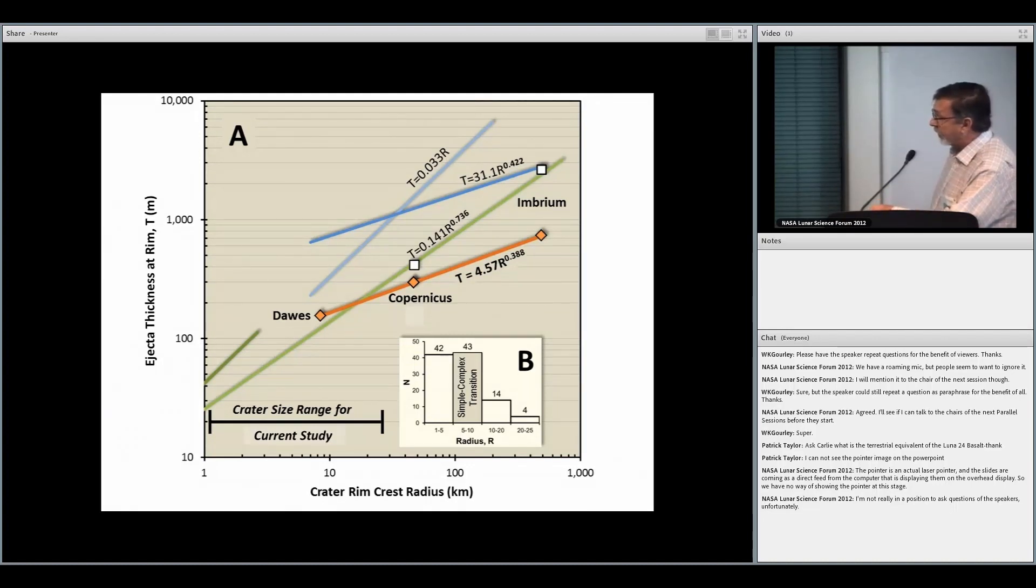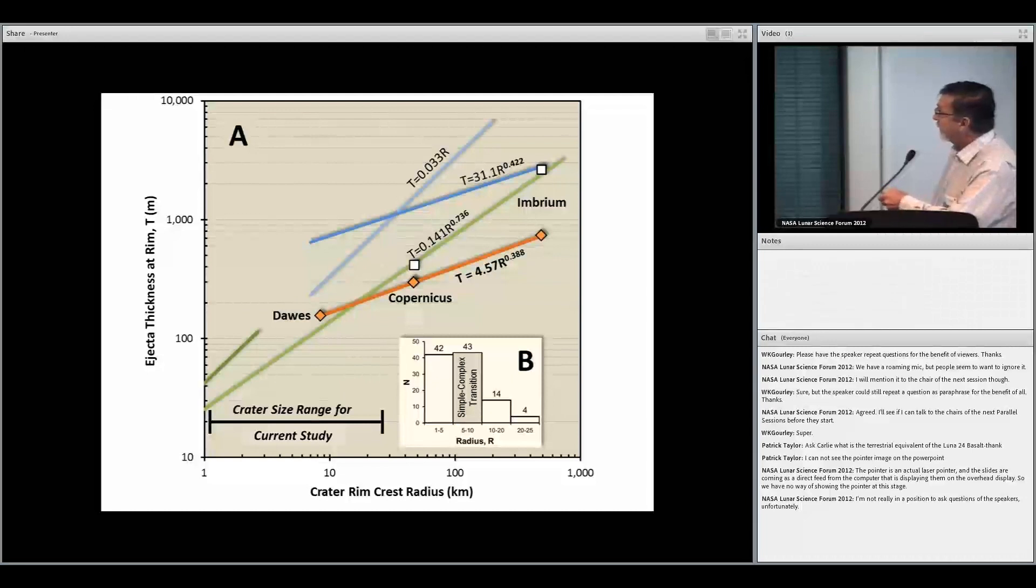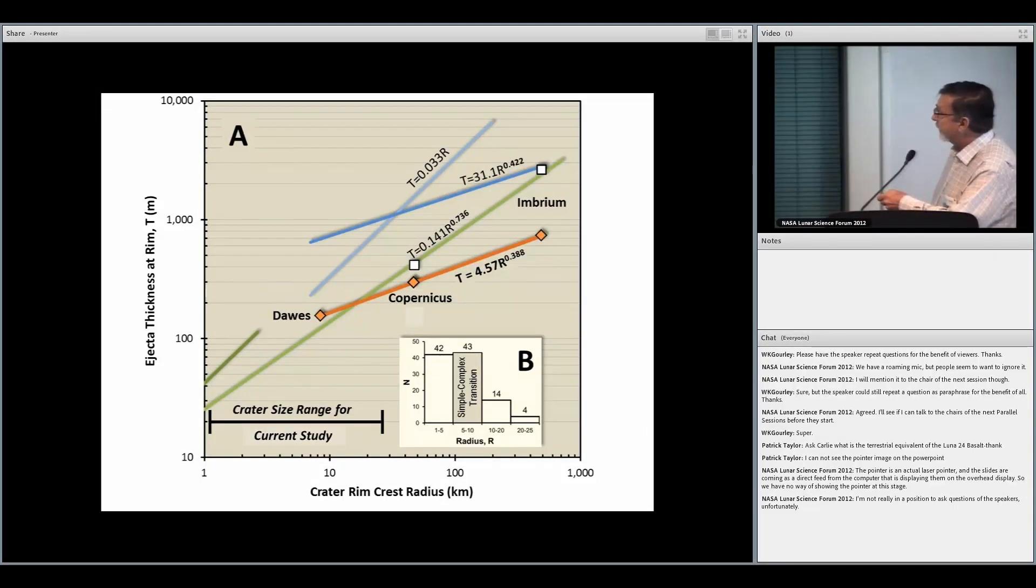And so there's more dilution of the primary ejecta at the rim of a larger crater than there is at a small crater. And so, as you see, what we're measuring here is a proxy for the primary component of ejecta. Because Dawes has very little, it's a small crater, reasonably small, and so it has very little ballistic sedimentation at its rim. Copernicus might have a bit more. And then you go out to Imbrium, and you've got quite a bit more. And Fassett et al. in a 2011 paper is very good, by the way. They did an independent measurement of Imbrium ejecta, and they came up with about 3,000 meters. And that's suggesting we get about 740 meters of primary ejecta. So that's suggesting that you've got about 25% or so primary material incorporated into the total ejecta deposit.